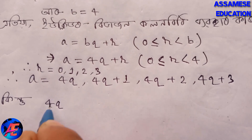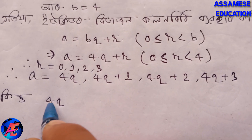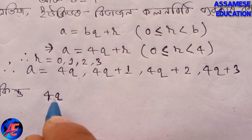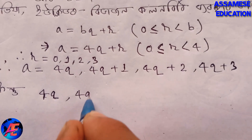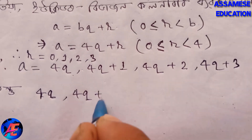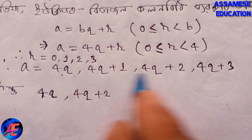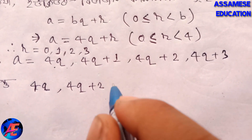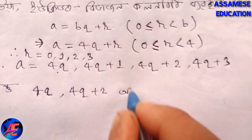Now, 4q and 4q plus 2 are even numbers, as they are divisible by 2.